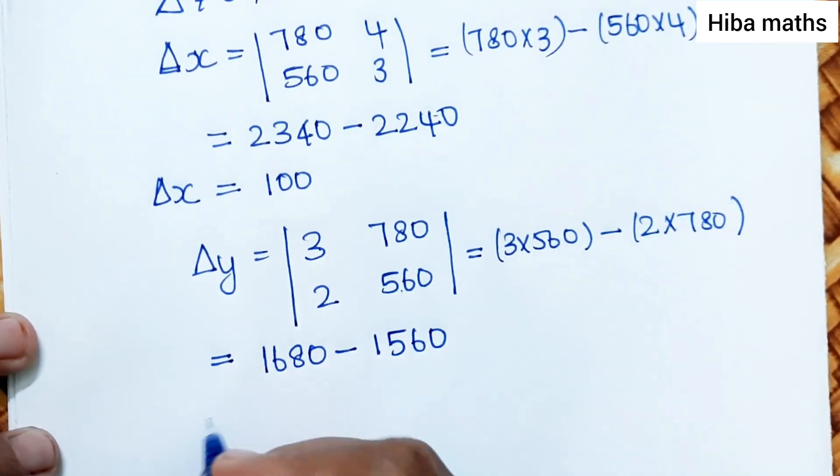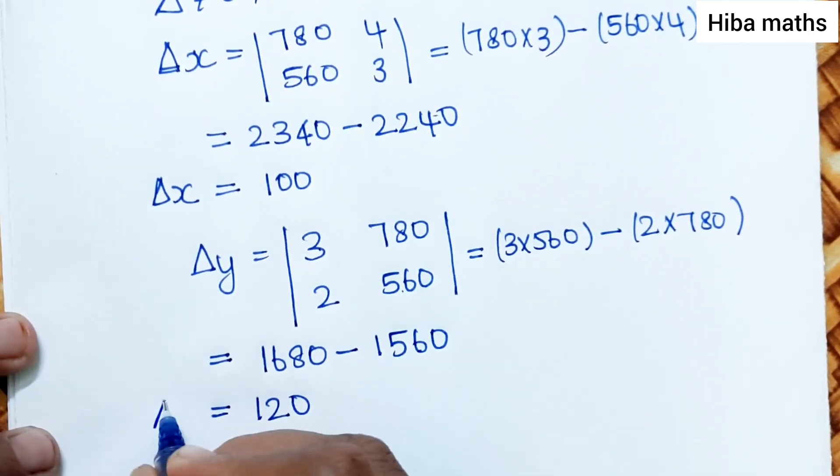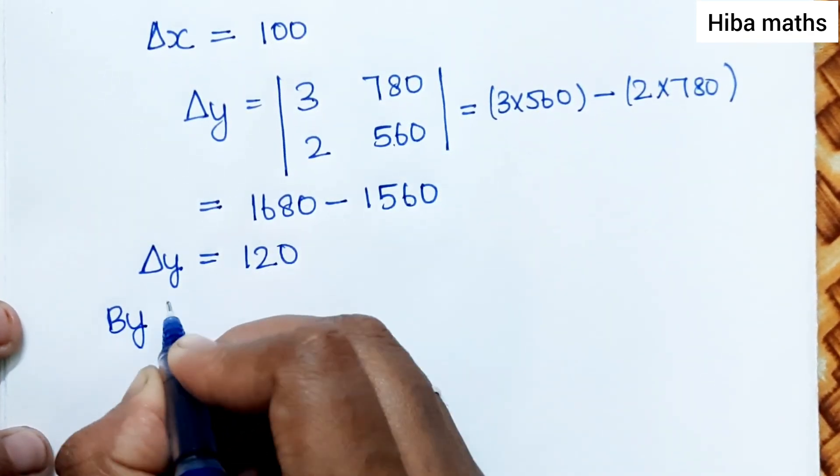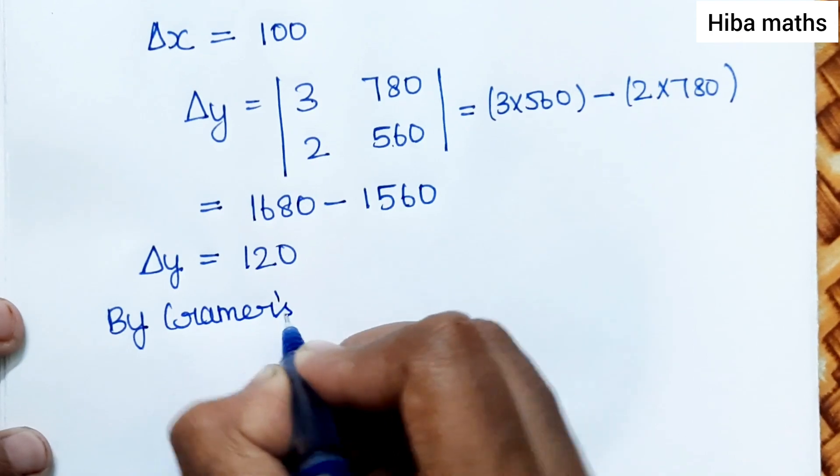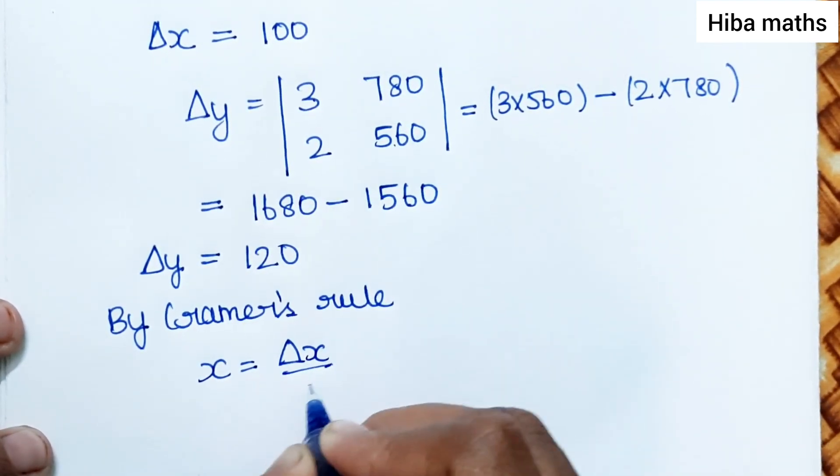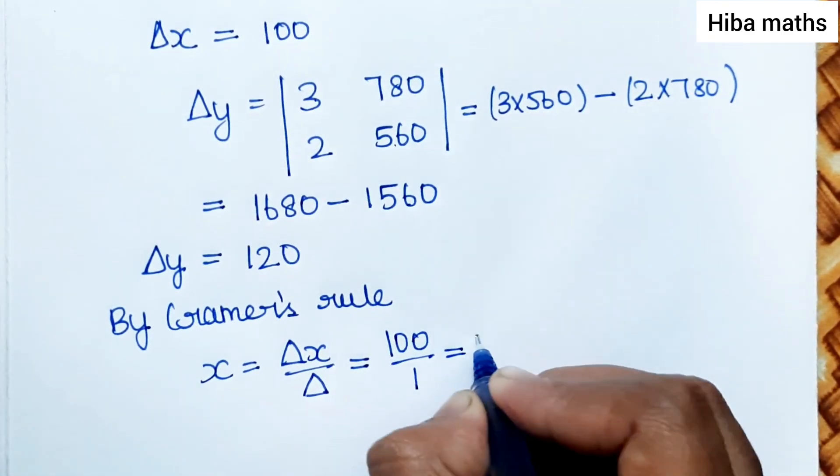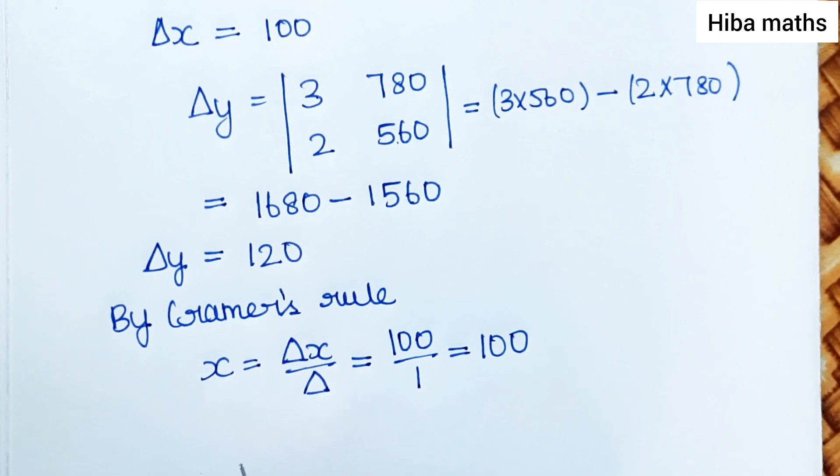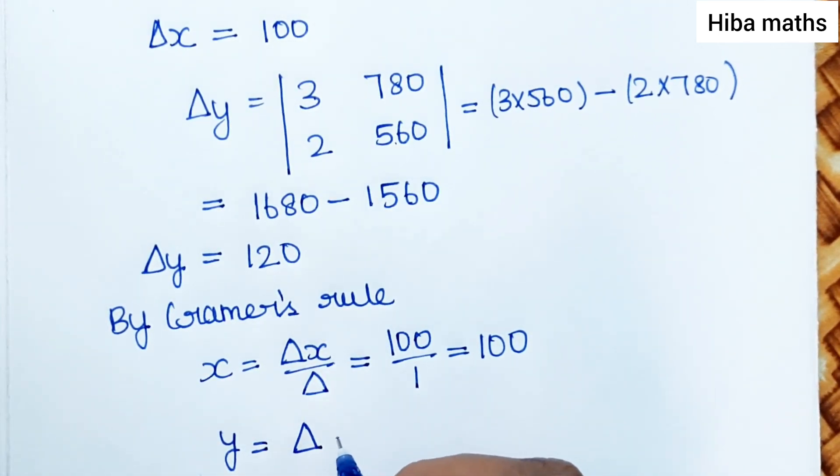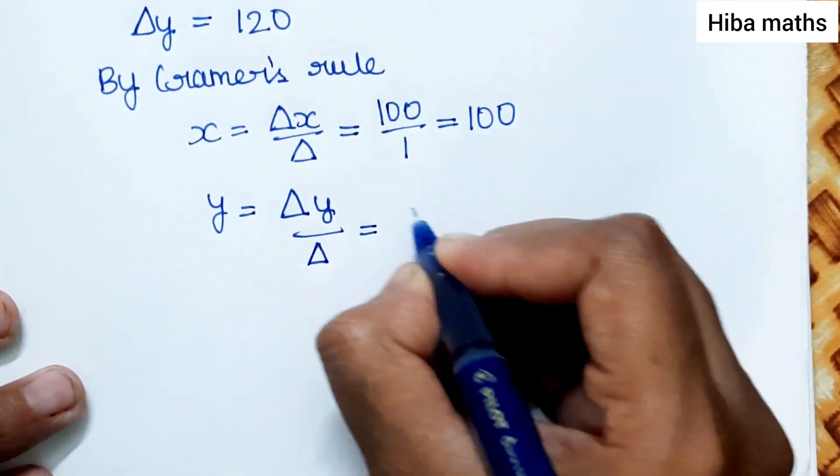Del y equals [3, 780; 2, 560], which equals 120. By Cramer's rule: x equals del x over del equals 100 over 1 equals 100, and y equals del y over del equals 120 over 1 equals 120.